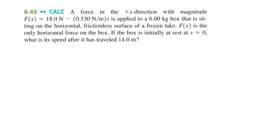The example problem we're going to do with this comes from your textbook. It is exercise 45, which is in section 6.4, back in the problems at the end of the chapter. And it says a force in the X direction with magnitude F of X equals 18 Newtons minus 0.53 Newtons per meter X is applied to a 6-kilogram box that is sitting on the horizontal frictionless surface of a frozen lake.